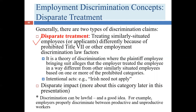Disparate treatment means discriminating against somebody because of their race, religion, age, or ethnicity. A historical example is the early 20th century signs in New York City reading 'Irish need not apply' — we're not going to hire you no matter how qualified you are, simply because of your ethnicity. People don't put out signs like that nowadays because they're unlawful, but that doesn't mean people's hearts are necessarily different. Some people may still have the inclination to discriminate, even if they're more discreet about it.